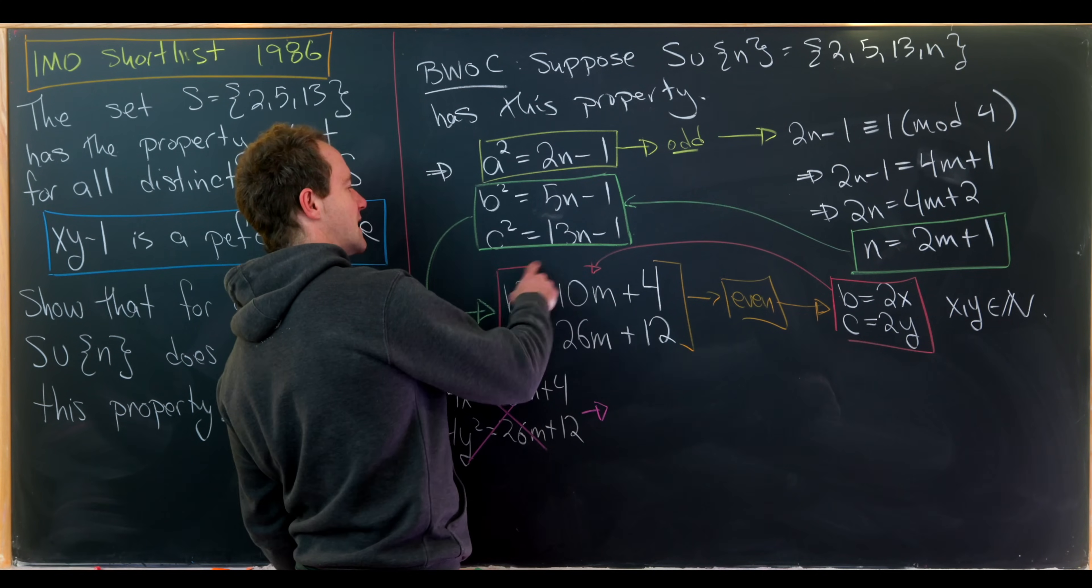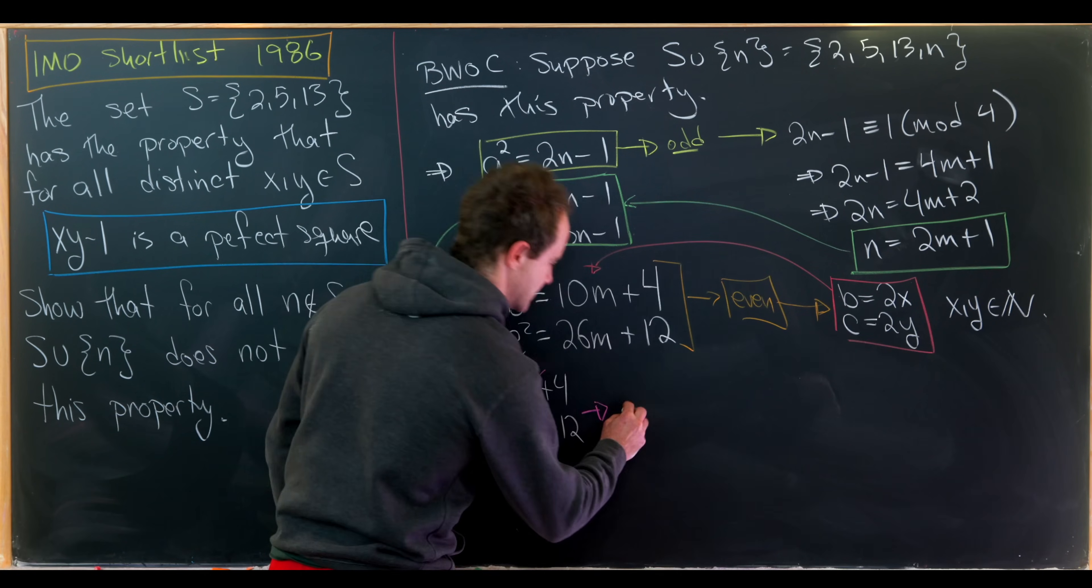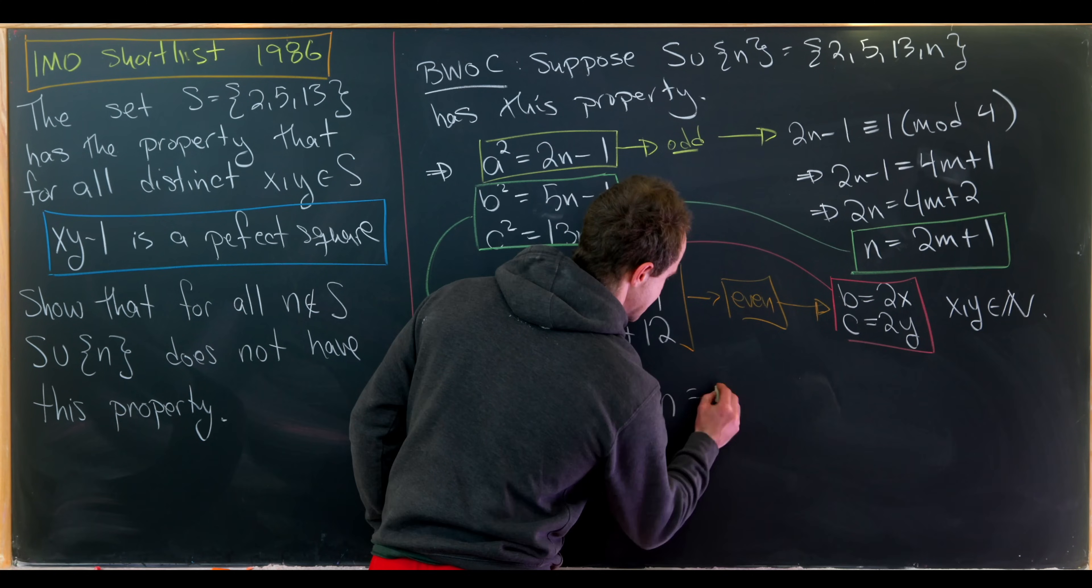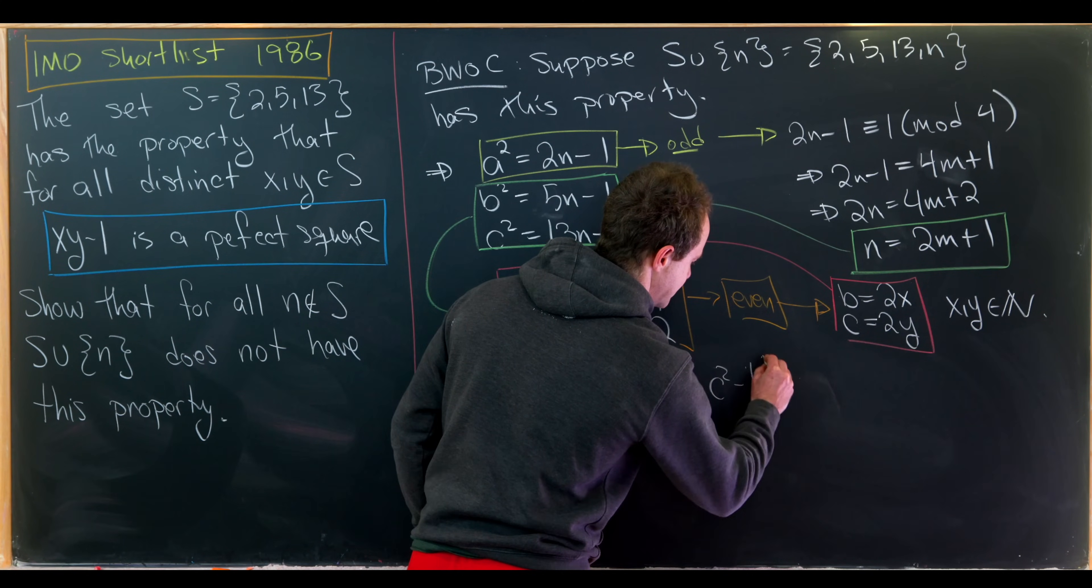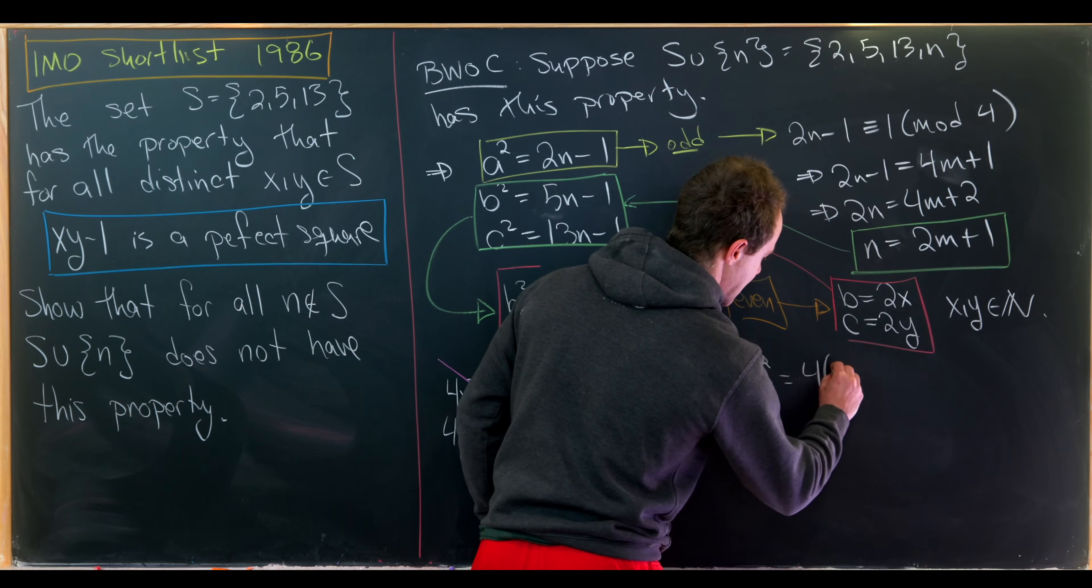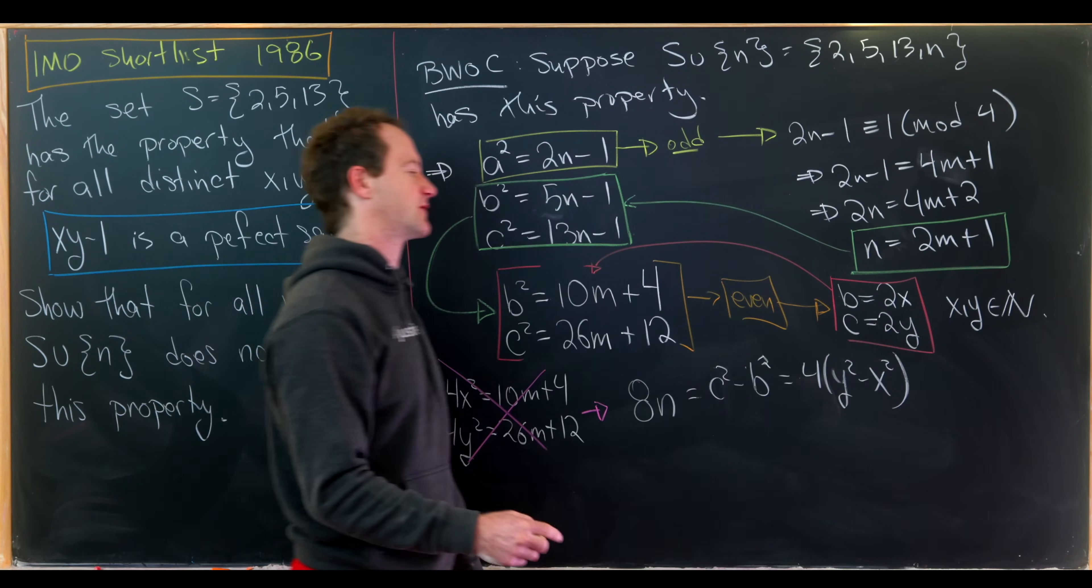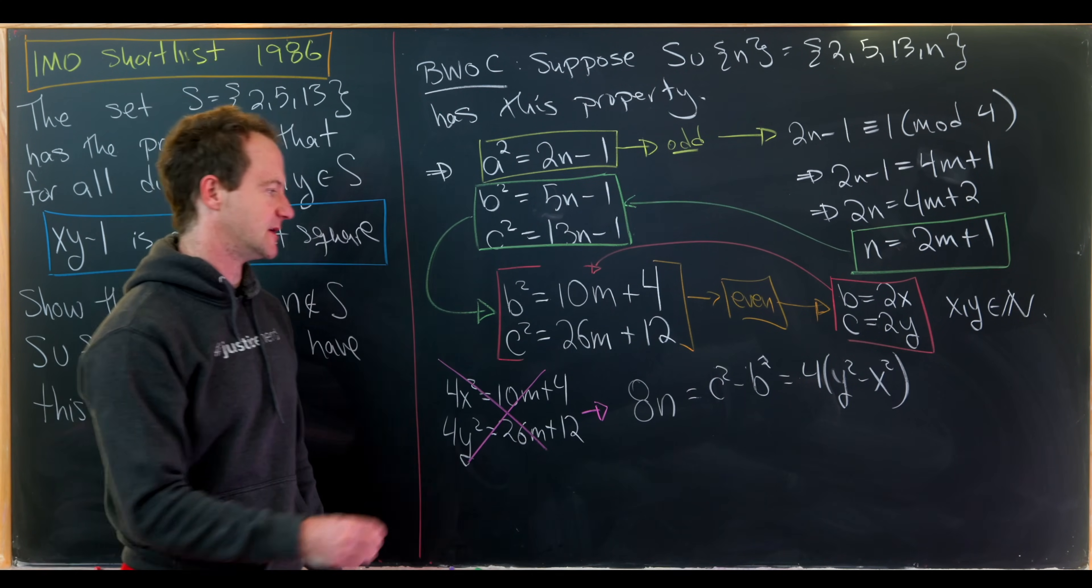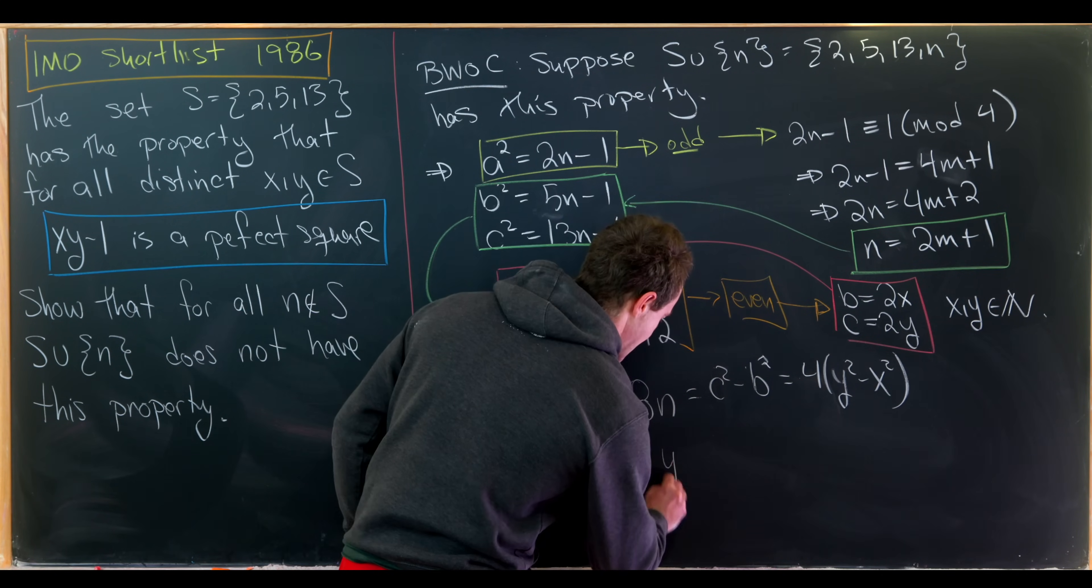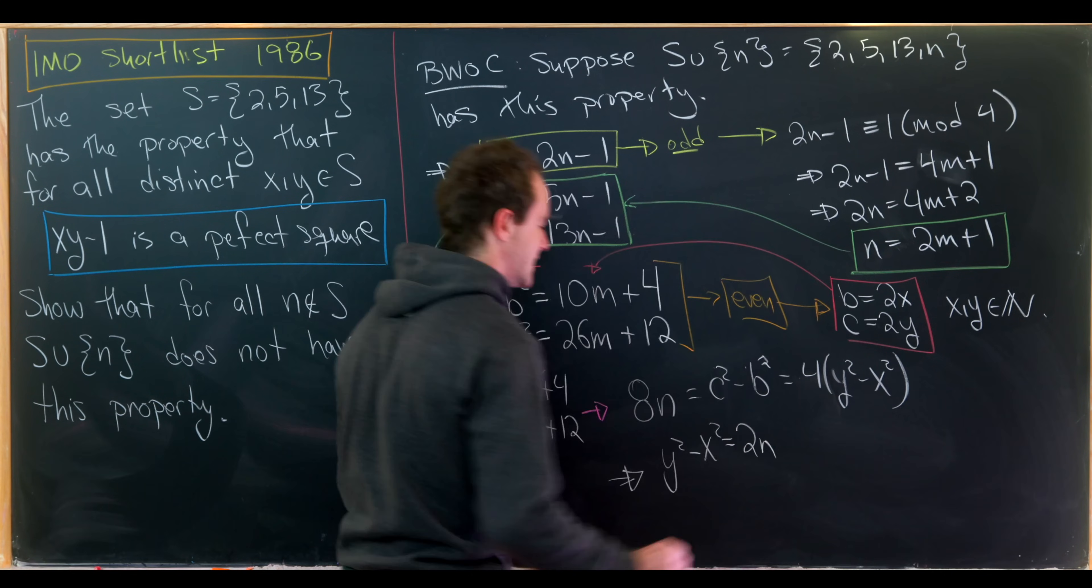What we'll do instead is look at the difference of b squared and c squared. So notice that c squared minus b squared is 13n minus 5n. The minus ones cancel. So we get 8n is equal to, like I said, c squared minus b squared. But that'll be 4 times y squared minus x squared using these expressions for b and c. So let's see. That tells us that y squared minus x squared is equal to 2 times n.